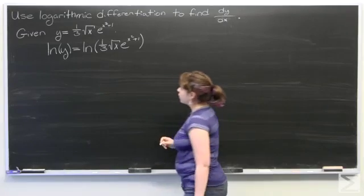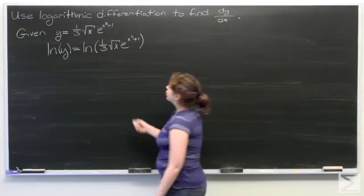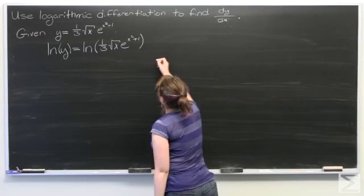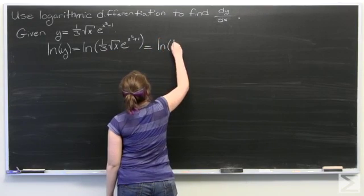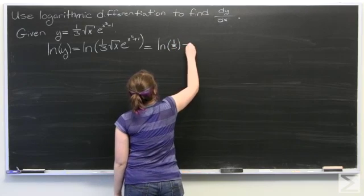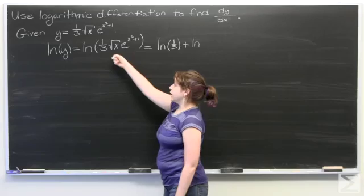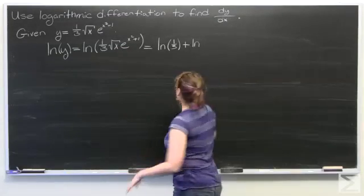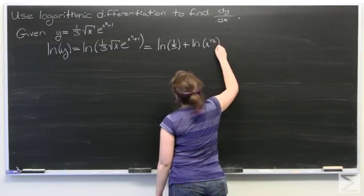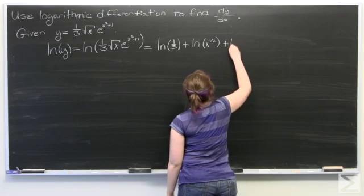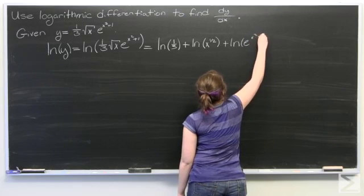Now using our logarithmic rules, because these are all multiplied together, we can rewrite this as the natural log of one third, plus the natural log of — instead of writing the square root of x, I'm going to write x to the one half — and then plus the natural log of e to the x squared plus one.